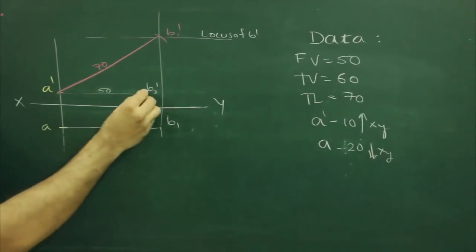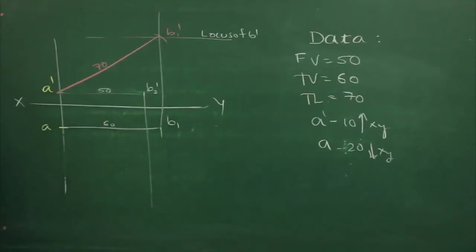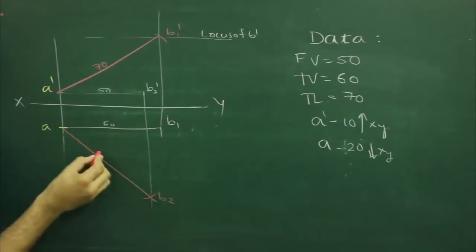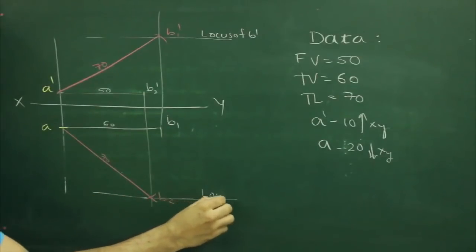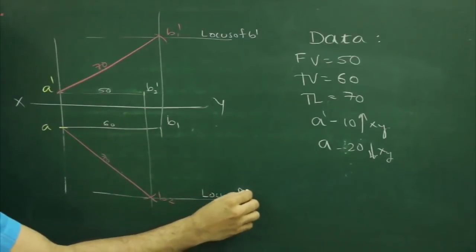And project this b2 dash straight down, and from a, we will cut 70. So we get true length, and as well as we draw locus of b.